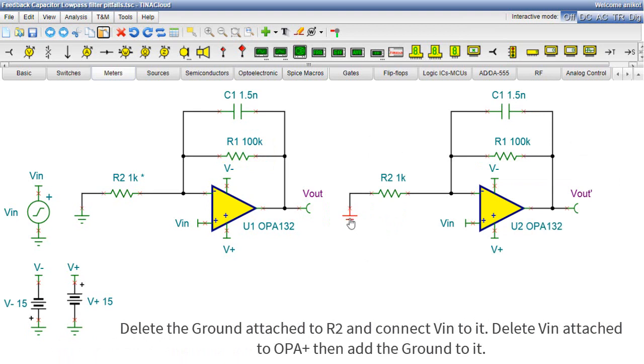Delete the ground attached to R2 and connect VIN to it. Delete VIN attached to the plus terminal of the op-amp, then add the ground to it.